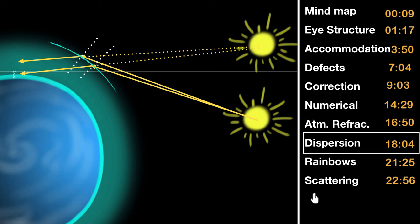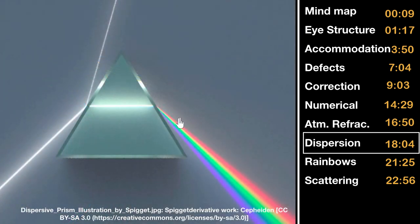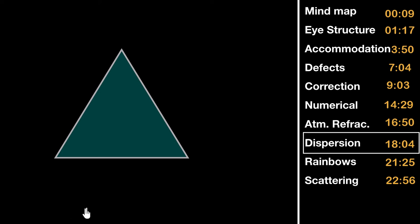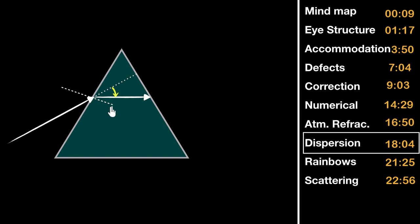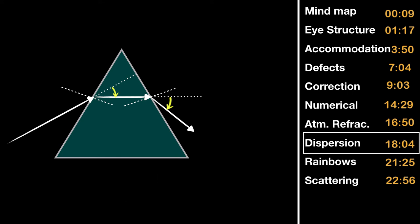Next up, dispersion. Dispersion refers to the splitting of white light into its constituent colors when it passes through a prism. To understand this, we first look at how a prism works. A ray of light enters the denser medium and bends towards the normal, then exits into the rarer medium and bends away from the normal. So the ray bends twice towards the base of the prism, and the emergent ray is not parallel to the incident ray.